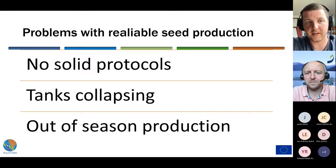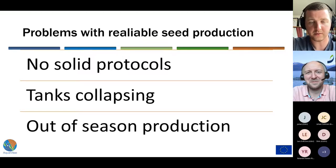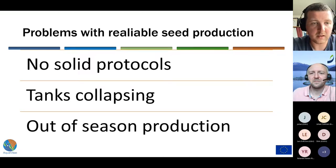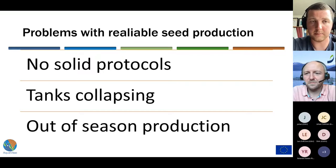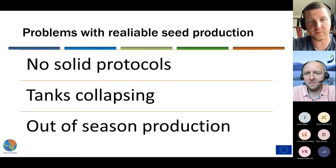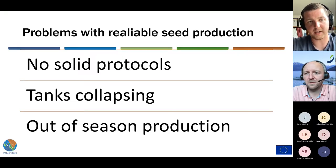However, there are a couple of problems when it comes to reliable seed production. There are no solid protocols available right now — a lot of oyster farmers use rules of thumb or gut feelings when producing oysters. Tanks can also be collapsing: tank A and tank B standing next to each other under the same conditions, tank B could collapse for no apparent reason while tank A continues just fine. Perhaps most importantly, oyster hatcheries are still unable to have out-of-season production. Oyster larvae have a seasonal cycle — reproducing in spring and summer, going into hibernation in winter — and producing oysters year-round would greatly benefit hatchery feasibility.